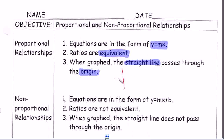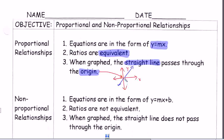So if you have your x and your y-axis, the origin — this is the x, that's your y — the origin is this point right here. If you have a line that looks like this, and let's say that it passes through the origin, then it's a proportional relationship.